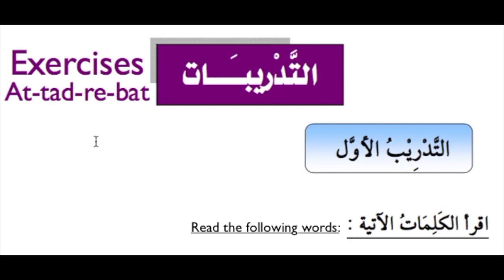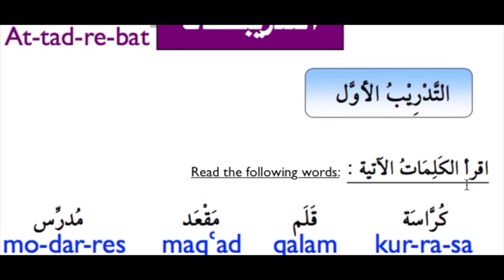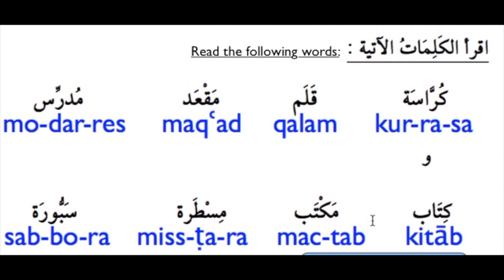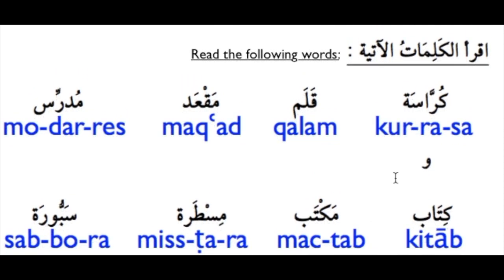Now we move to our first exercise. التدريبات — Exercises. تدريب الأول: اقرأ الكلمات الآتية. كُرَّاسَ — قَلَم — مَقْعَد — مُدَرِّس — كِتَاب — مَكْتَب — مِسْطَرَ — سَبُّورَ.